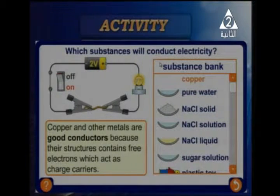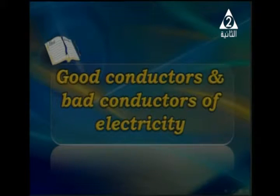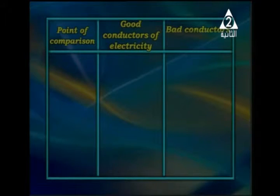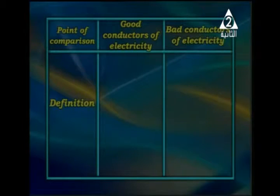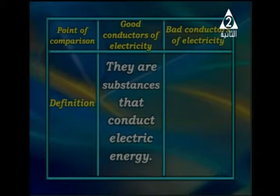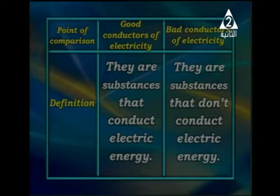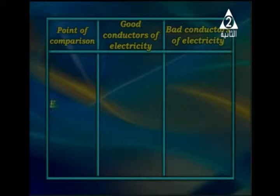Let's look at the comparison between good conductors and bad conductors of electricity. We have a table with points of comparison. The definition: good conductors are substances that conduct electric energy, and bad conductors are substances that do not conduct electric energy.